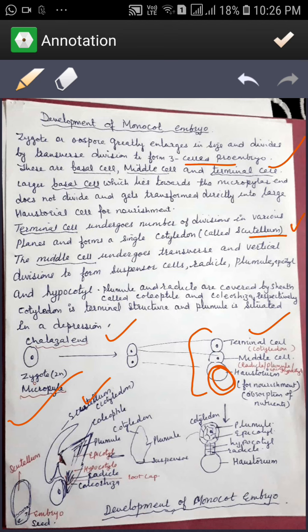The middle cell will form suspensor cells, radicle, plumule, epicotyl and hypocotyl by mitotic divisions.